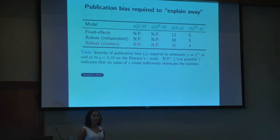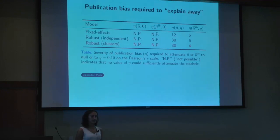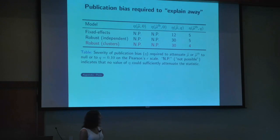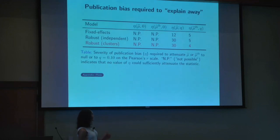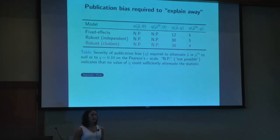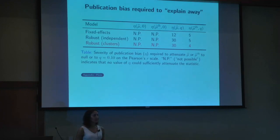Looking at the amount of publication bias required to explain away the effects: the first two columns show the bias needed to shift the pooled point estimate and its lower confidence interval limit to the null. Since even the worst-case estimate is greater than zero, that's not possible. A more stringent question is shifting the pooled point estimate to a correlation of 0.1 — still small enough to perhaps not care about. To shift the observed correlation of 0.18 down to 0.1 would require affirmative results to be at least 30 times more likely to be published than non-affirmative results.